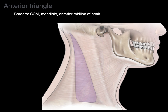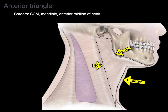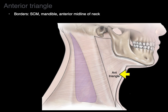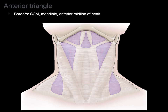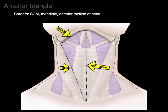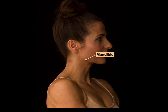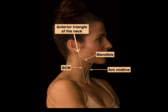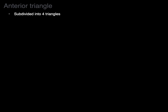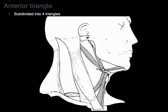Now the anterior triangle of the neck — its borders are the sternocleidomastoid, the mandible, and the anterior midline of the neck. From the front: there's our sternocleidomastoid, our mandible, anterior midline — that's what makes the anterior triangle. The anterior triangle is subdivided into four triangles.